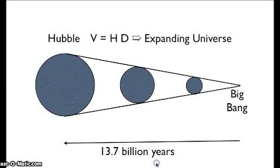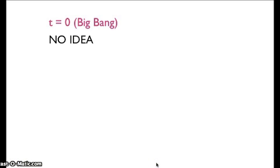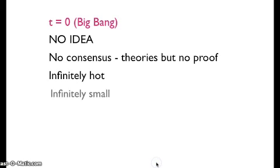At T equals zero, the time of the Big Bang, we have no idea what the universe was like. All the rules of physics break down at this point. There is no consensus. There are ideas about what it was like, but no proof. All we can really say is that the universe was infinitely hot, infinitely small, and infinitely dense.